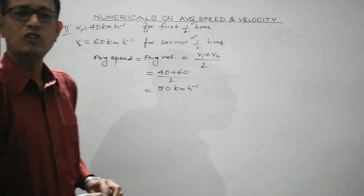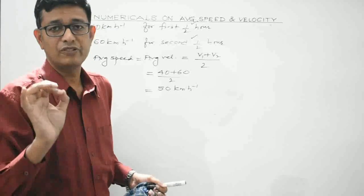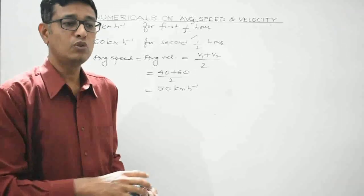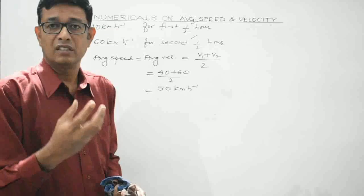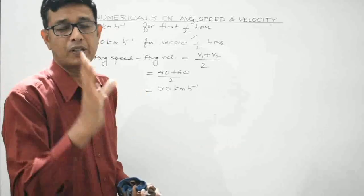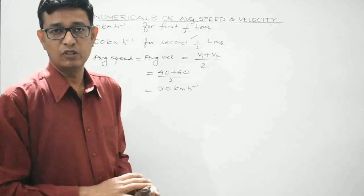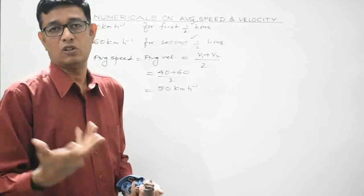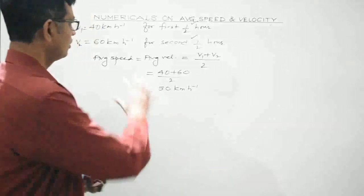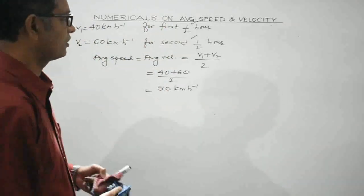All these numericals are straightforward — the key is to have very clear concepts. Read the question carefully and then recall the appropriate formula. This completes the question on average speed and average velocity.